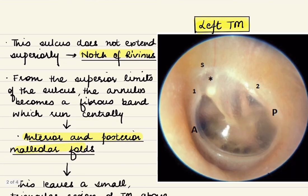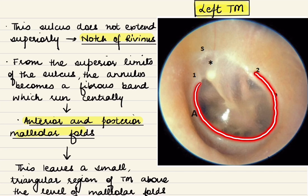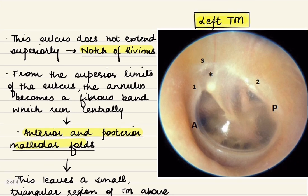Most of the circumference of the tympanic membrane is thickened to form a fibrocartilaginous ring, known as the tympanic annulus or annulus tympanicus. This annulus is lodged in a groove in the tympanic bone known as the tympanic sulcus or sulcus tympanicus. This sulcus does not extend all around the tympanic membrane — it is deficient superiorly, and this area is known as the notch of Rivinus.